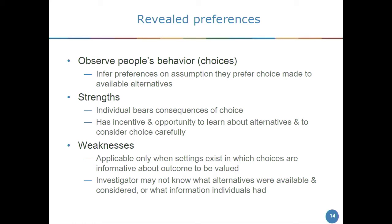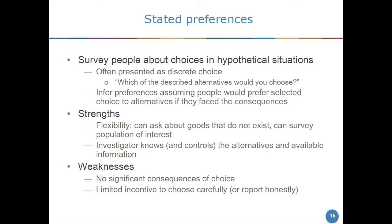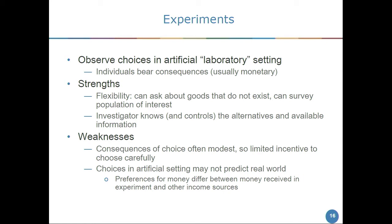Stated preferences survey people about hypothetical situations — what would you choose among these alternatives? The strength is incredible flexibility: you can ask about goods that don't exist and ask the people you care about for the policy in question, and the investigator can control what information respondents have. The weakness is there's no real significant consequence the respondent bears, and hence less incentive to choose carefully. Experiments are somewhere in between — laboratory settings, artificial, possibly with real but trivial consequences, but with the advantages of stated preference in terms of investigator control over information and available choices.